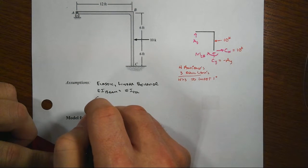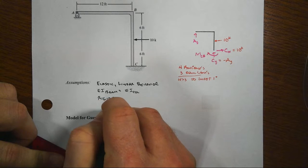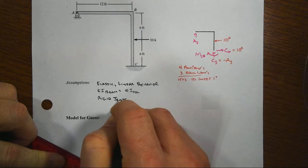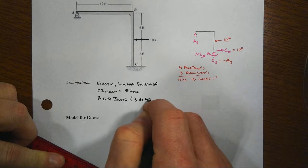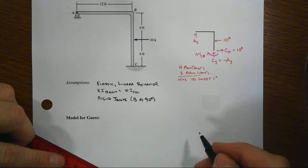And there might be some rotation at B. But oh, hey, there's one of our other assumptions, rigid joints. In this case, rigid joint is going to be at B, which is at 90 degrees and it should remain 90 degrees after the deformation.